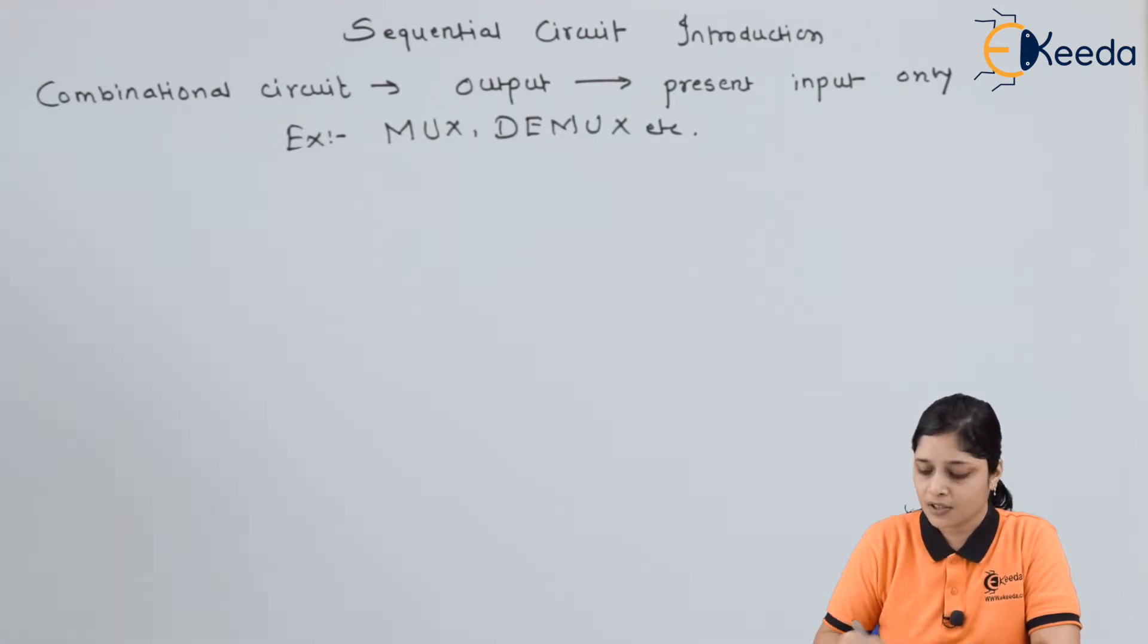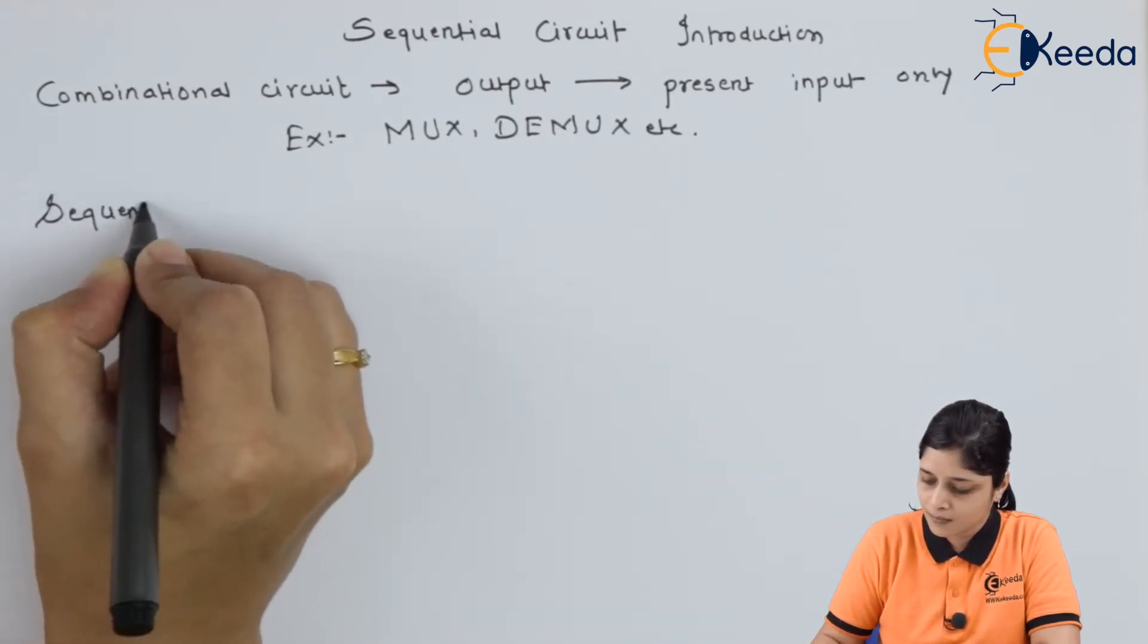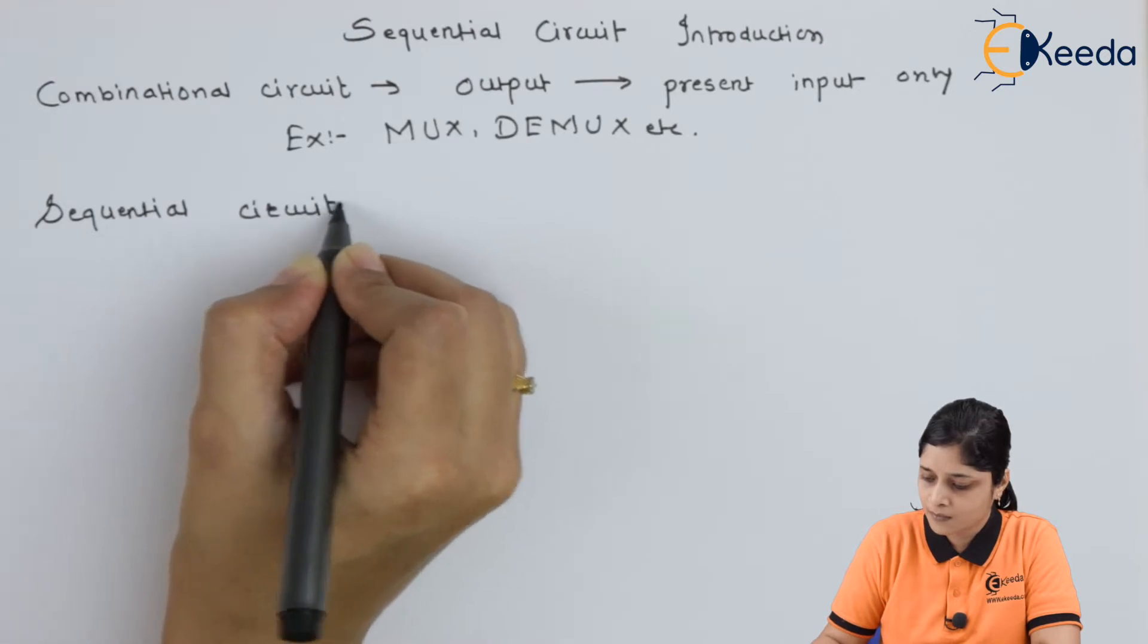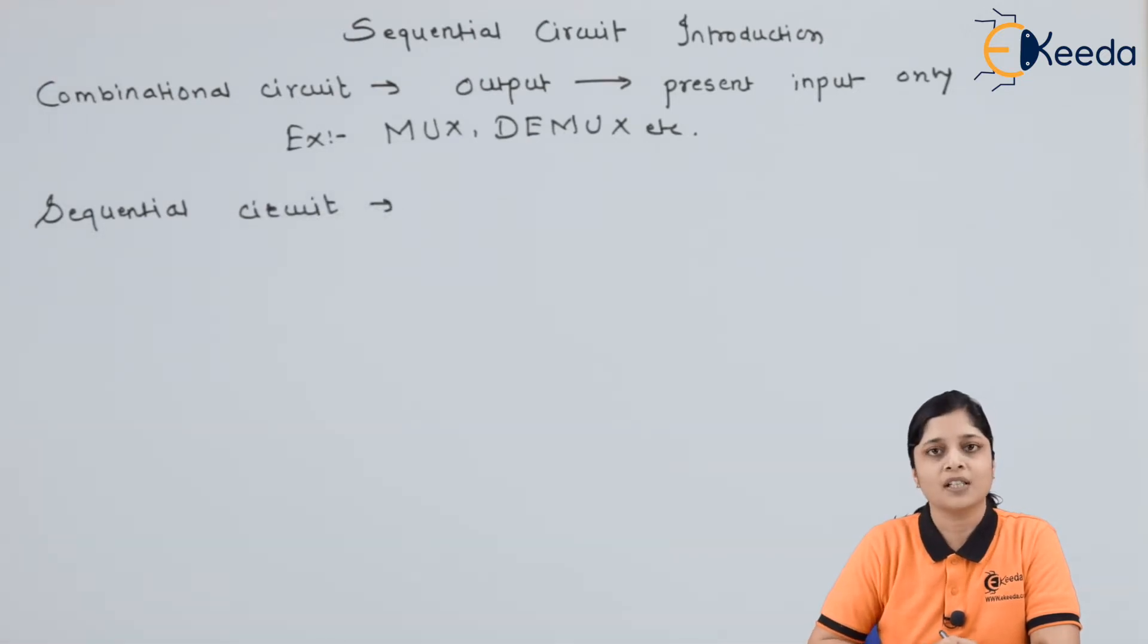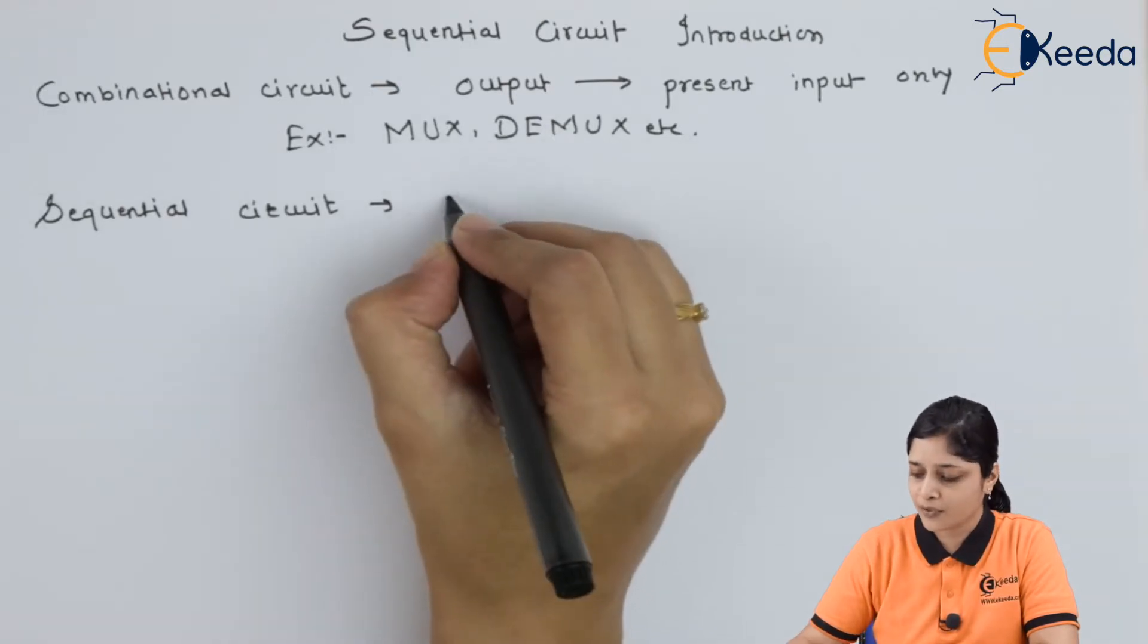In sequential circuit, output depends on present input and past output. That is the difference.